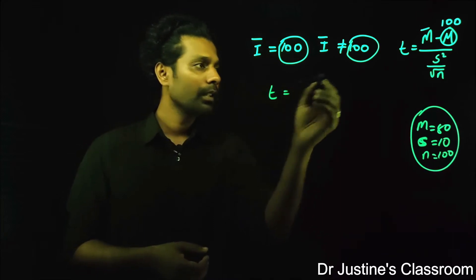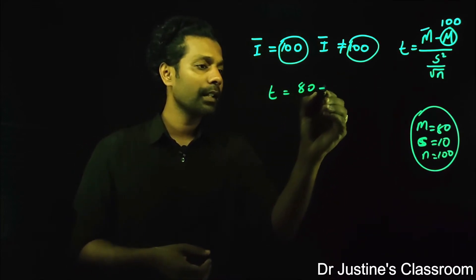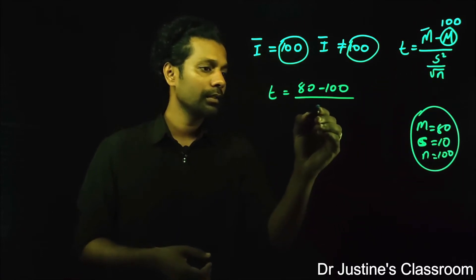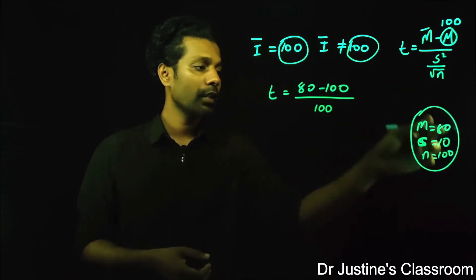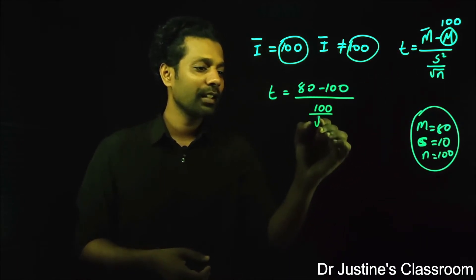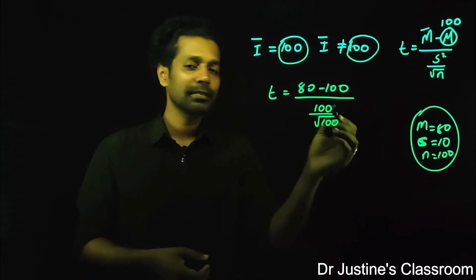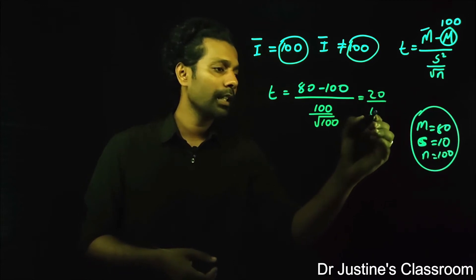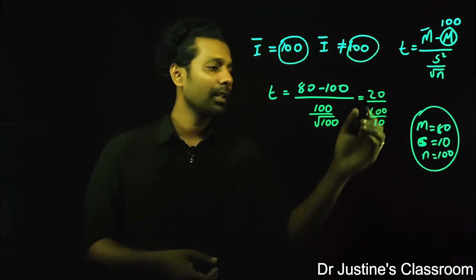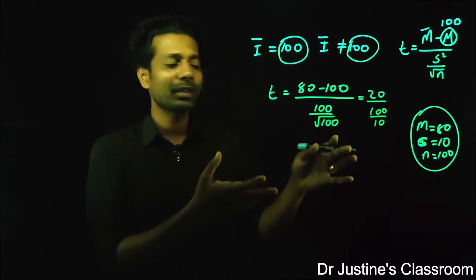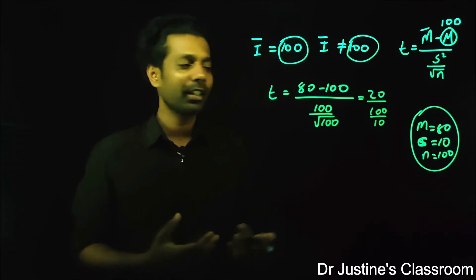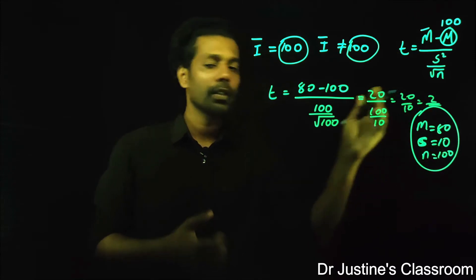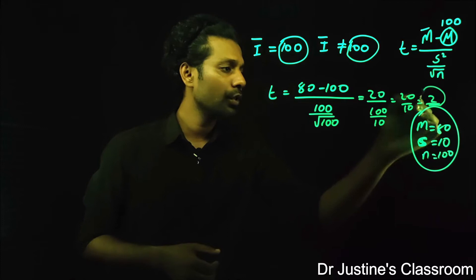So t equals 80 minus 100 divided by the standard deviation score. The square of 10 is 100, and the root of 100 is 10. That means this value will be negative 20 divided by 10, which gives a t value of 2. So I have a t value of 2 here.